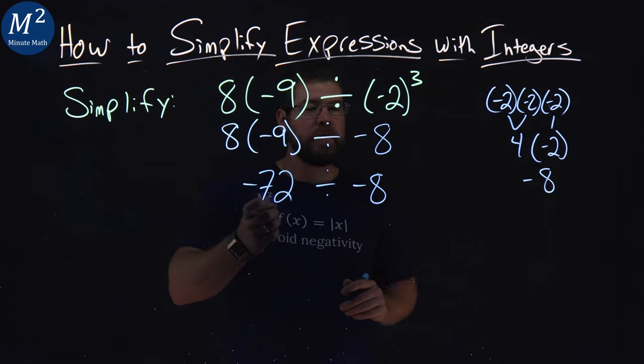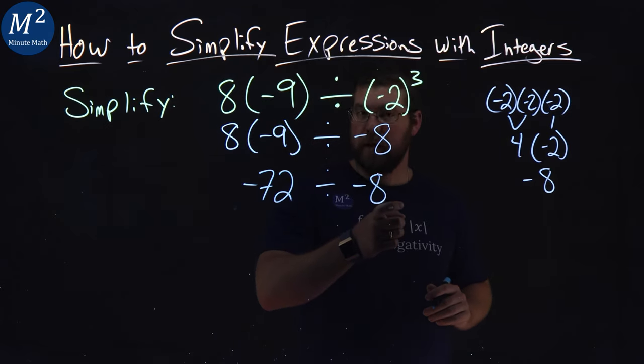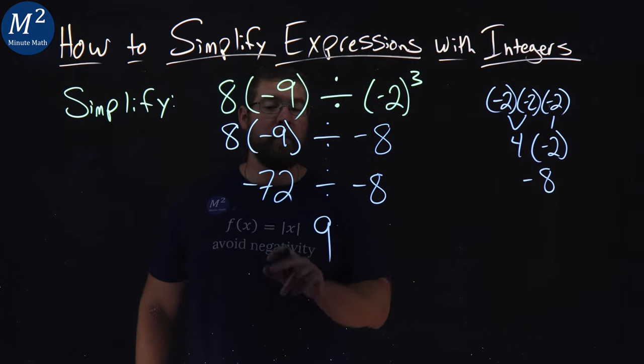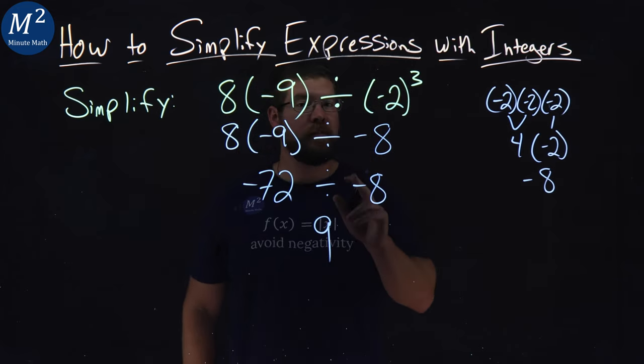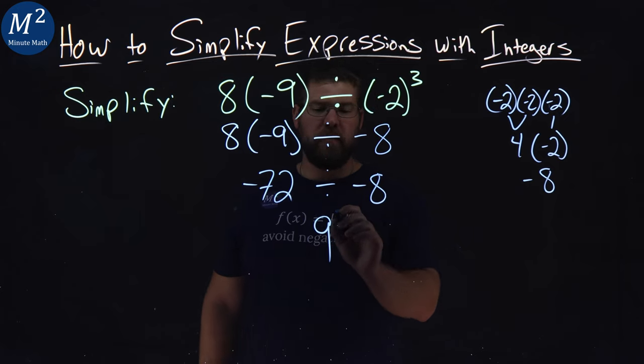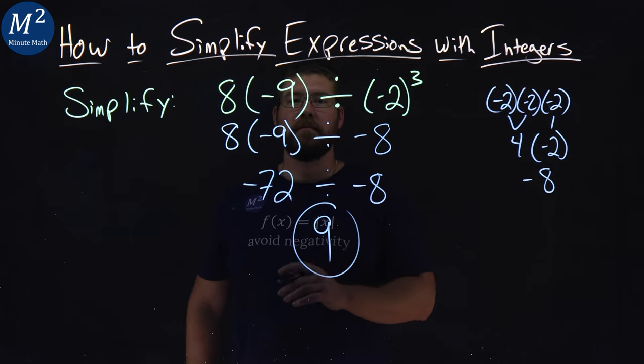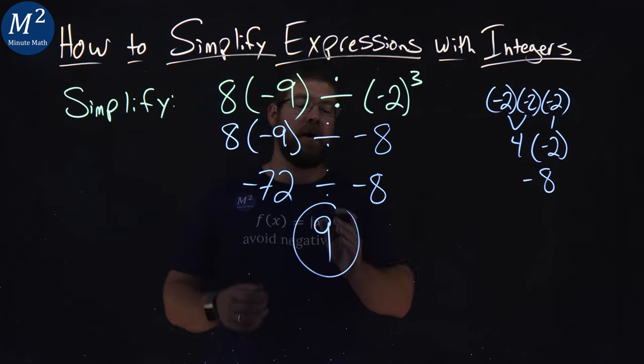Negative 72 divided by negative 8 gives me positive 9. Remember, a negative divided by a negative is a positive. And so, after all that, our answer is simplified to be positive 9.